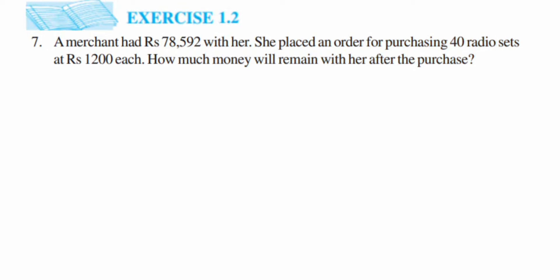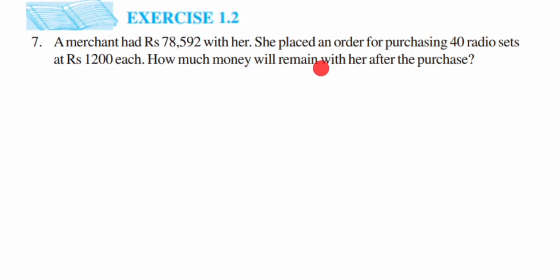Hey everyone, here's a question from Exercise 1.2, seventh question, from the 'Knowing Numbers' chapter. The question is: a merchant had rupees 78,592 with her. She placed an order for purchasing 40 radio sets at rupees 1200 each. How much money will remain with her after the purchase? It's a very simple question.